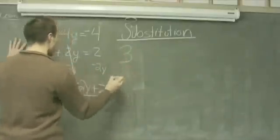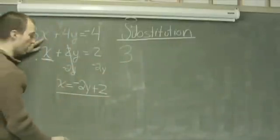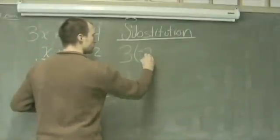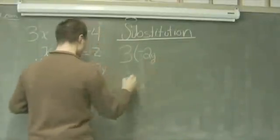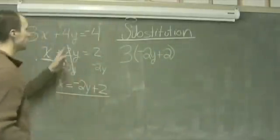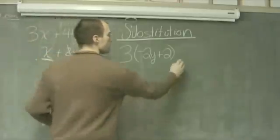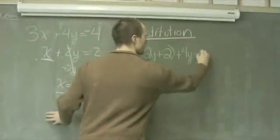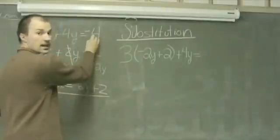I have 3 times what was my x value, which is now negative 2y plus 2 in parentheses, plus 4y, equals negative 4.